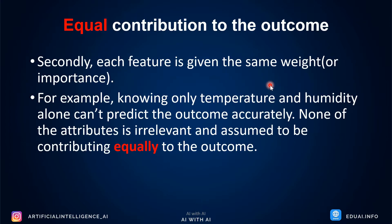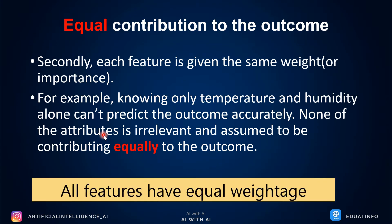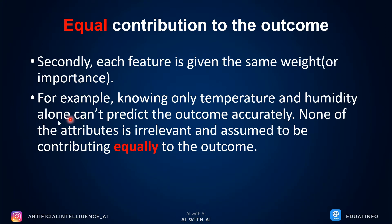Equal weightage means each feature is given the same weight or importance. Naive Bayes will not consider that temperature has more weightage or that outlook has less weightage. Knowing only temperature and humidity alone cannot predict the outcome accurately. None of the attributes is considered irrelevant — all are assumed to contribute equally to the outcome. So Naive Bayes considers all features — temperature, humidity, and outlook — with equal weightage and calculates the outcome.